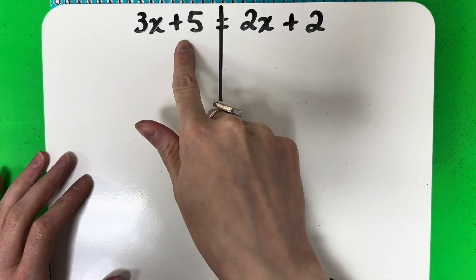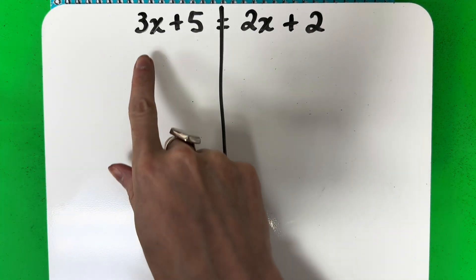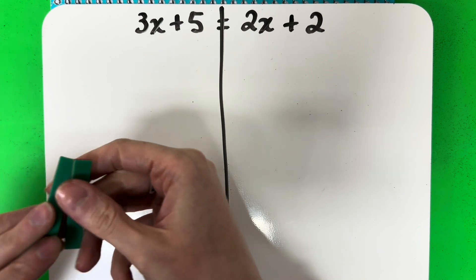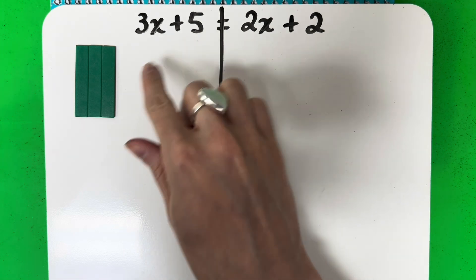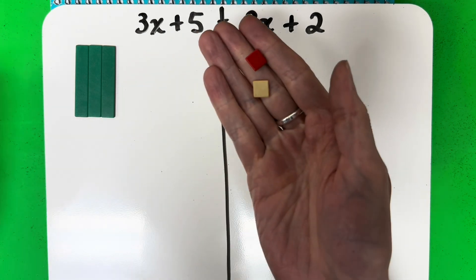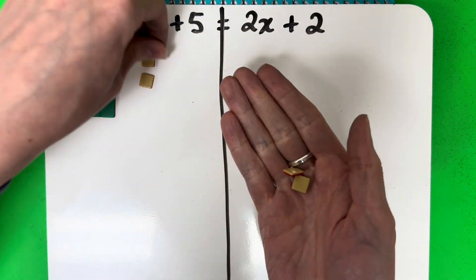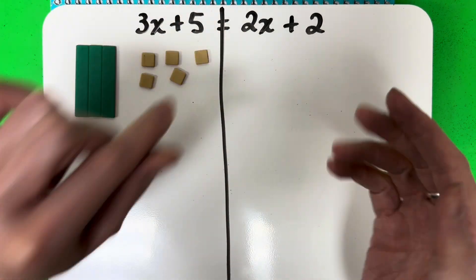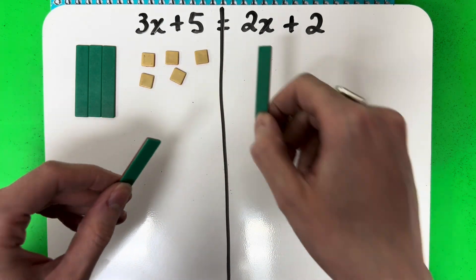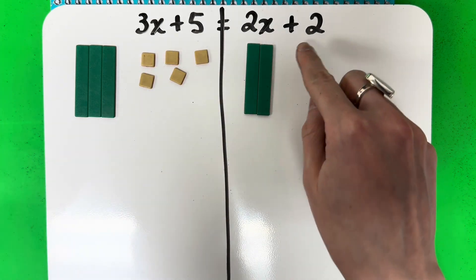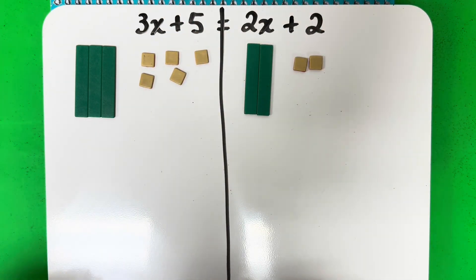Example 2: 3x plus 5 equals 2x plus 2. Remember, on your equal sign you're going to have your vertical line. Let's go ahead and model this. I have 3x — since it has a variable, I'm going to use the rectangle. It's positive 3, so that's the green side. And plus 5 — that's a constant, so that's going to be the small squares. It's positive 5, so not the red side. Now the other side: 2x has a variable, so I'm going to use the rectangles. It's positive 2, green side, plus 2 — that's a constant, positive 2, not the red side.